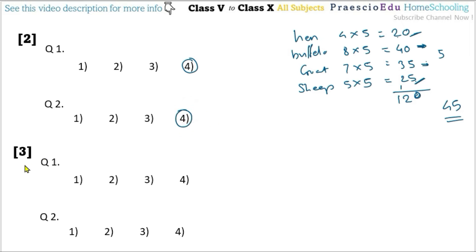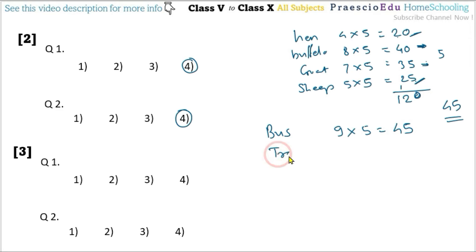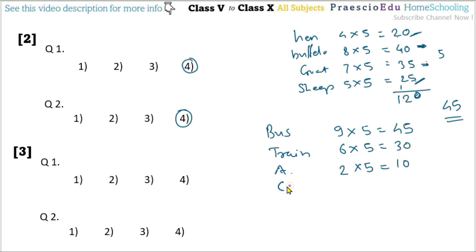Pictograph number 3 shows types of vehicles and passengers. Each image represents 5 passengers. Bus has 9 images: 9×5 = 45. Train has 6 images: 6×5 = 30. Aeroplane has 2 images: 2×5 = 10. Car has 4 images: 4×5 = 20. Total is 105 passengers.